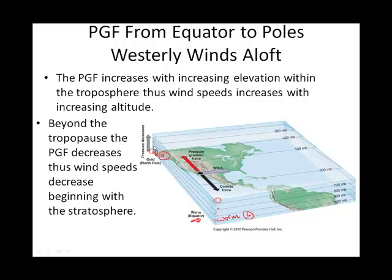The cold air squeezes down, so molecules are sparse up high. Aloft, we have low pressure at the poles and relatively high pressure aloft at the equator. So this pressure gradient force — PGF, pressure gradient force aloft — with deflection to the right in the northern hemisphere, creates geostrophic wind.